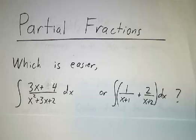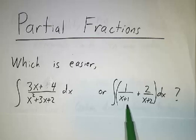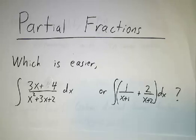If you had a choice of integrating 3x plus 4 over x squared plus 3x plus 2, or 1 over x plus 1 plus 2 over x plus 2, you would almost certainly choose to do the second one.